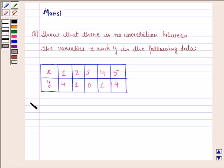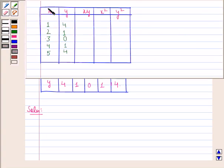So let us start with the solution to this question. First of all, we make a table with the following columns: x, y, xy. Let us multiply x with y to get xy.